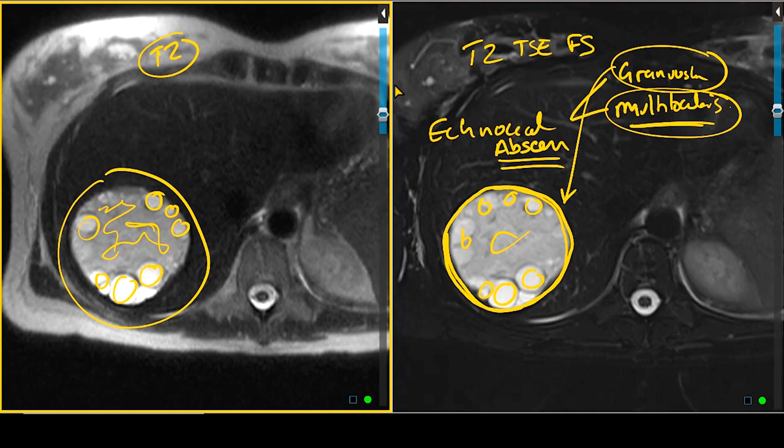This finding is endemic in certain parts of the world, such as the Middle East, the Mediterranean region, Australia, and New Zealand. So if you see a patient with a mass that looks like this who is from or has visited one of those countries, you have to be worried about an underlying echinococcal abscess.